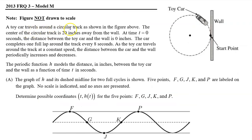A toy car travels around a circular track as shown in the figure to the right. The center of the circular track is 20 inches from the wall. At time t equals zero seconds, the distance between the toy car and the wall is zero inches. The car completes one full lap around the track every eight seconds. As the toy car travels around the track at a constant speed, the distance between the car and the wall periodically increases and decreases. The periodic function H models the distance in inches between the toy car and the wall as a function of time t in seconds.